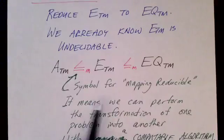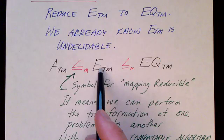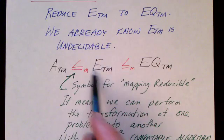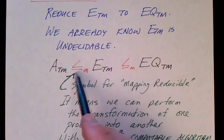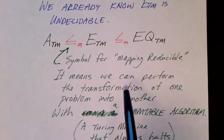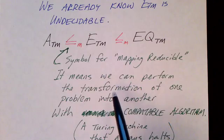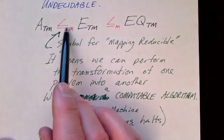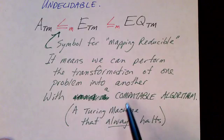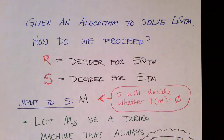We use the mapping reducibility symbol to mean that we can reduce the acceptance problem of Turing machines into the emptiness problem, and in this proof we reduce ETM to EQTM — so there's a transitivity going on here. Mapping reducibility means we can perform the transformation of one problem into another, and this transformation has to be done using a computable algorithm. A computable algorithm is one that can be executed by a Turing machine that always halts.